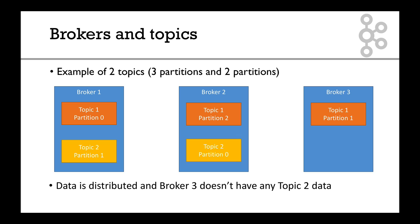Let's take a visual example where we have two topics and three brokers. The first topic has three partitions and the second has two partitions. For topic one (in orange), partition zero is on broker one, partition two is on broker two, and partition one is on broker three — so the data is spread between three different brokers. For topic two (the yellow topic), broker one has partition one and broker two has partition zero.